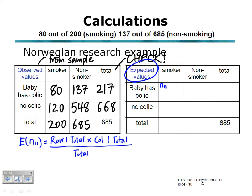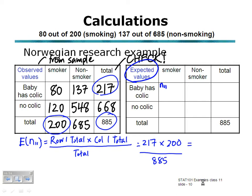The expected values are found by taking the row total times the column total divided by the overall total. For our first row and first column, this formula comes out as 217 — that's the row total — multiplied by 200, that's the column total, divided by 885, the overall total. We'd use a calculator or Excel for this, giving 49.0395. We need to keep the accuracy of these figures, so we have 49.0395 for the expected value in cell N11.